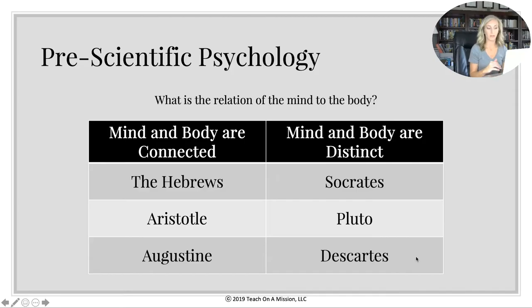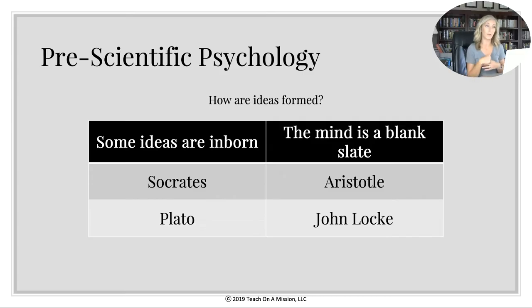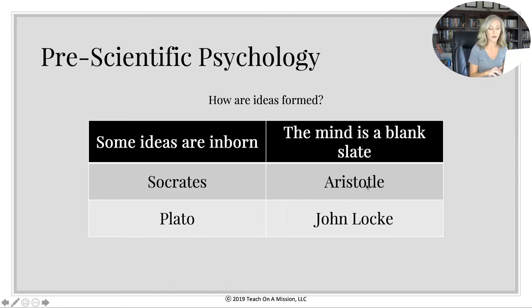Whereas Socrates, Plato, and Descartes believed that the mind and the body are two distinct things. That got us to the question of how ideas are formed. Socrates and Plato say that some of those ideas are inborn — we innately have ideas. Whereas Aristotle and John Locke say that the mind is a blank slate, meaning we are completely impressionable by our environment.